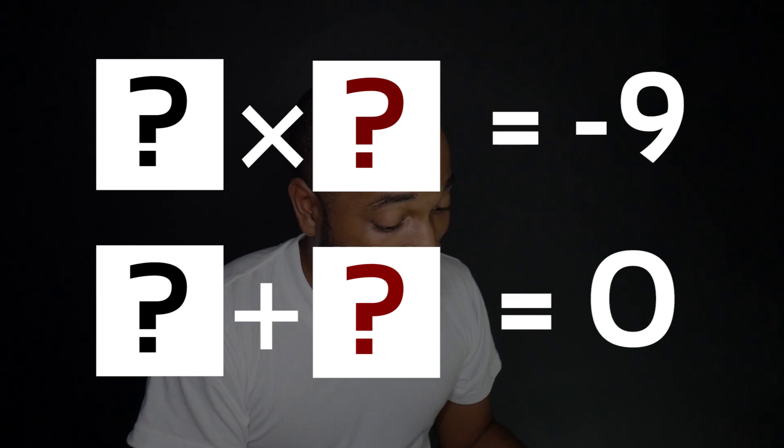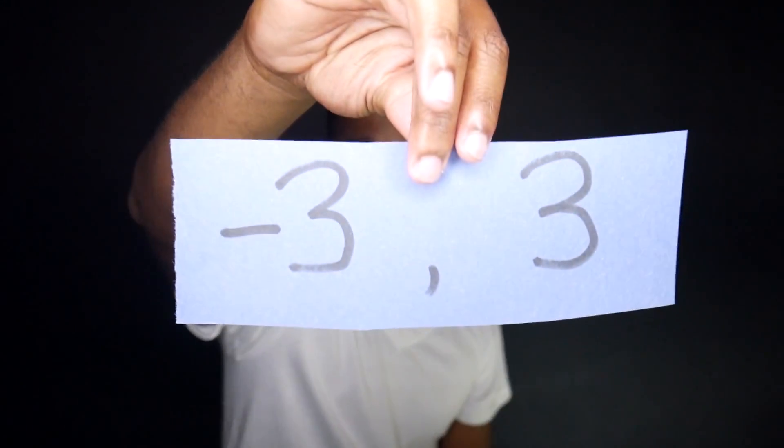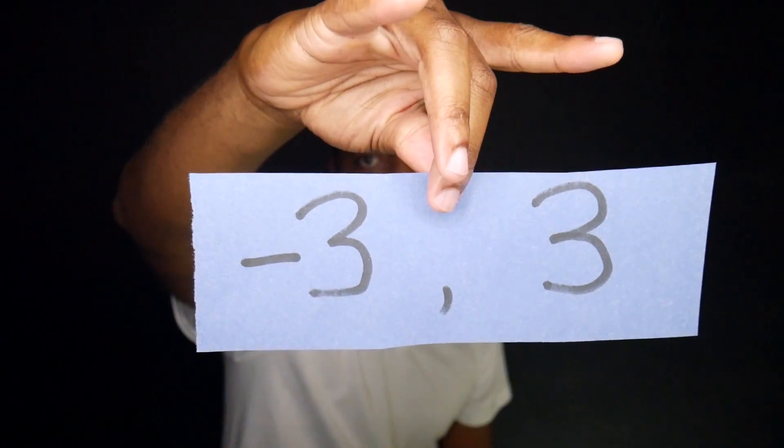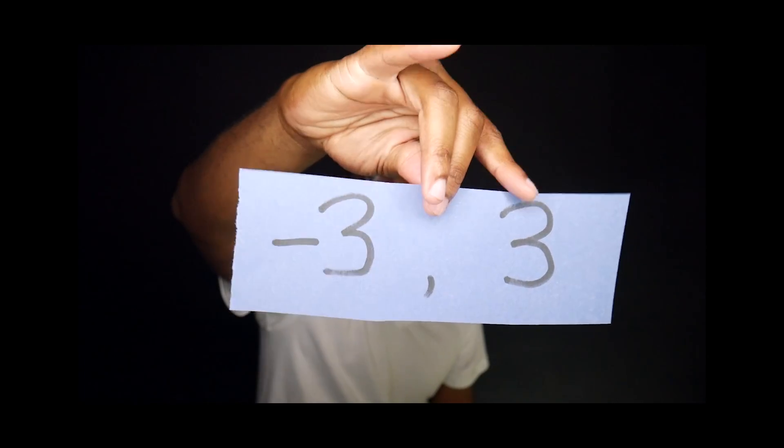This one is really interesting: these two numbers add up to actually give me 0, but when I multiply them I still get negative 9. Don't forget to keep tallying how many marks you have — at the end I'll let you know what your mark corresponds to. The two numbers that add to give 0 but multiply to give negative 9 are negative 3 and 3. Beautiful question, ain't it?